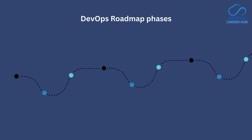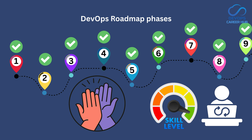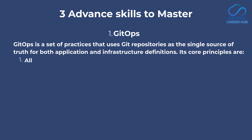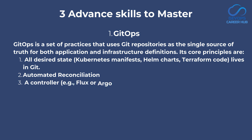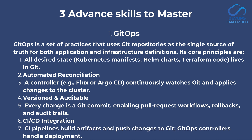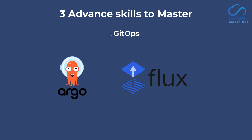If you have completed all nine phases of the DevOps roadmap, give yourself a big high five. By now you would have become a highly skilled DevOps engineer ready to excel in the job and in interviews. If you want to take it further and explore the latest DevOps trends, here are three additional skills to master. The first one is GitOps — a modern DevOps practice that uses Git as the single source of truth for managing both application code and infrastructure. It automates deployments and infrastructure changes by storing configurations in Git repositories, enabling teams to apply changes, rollback issues and maintain consistency using familiar Git workflows. You can learn either ArgoCD or Flux, both of which are popular GitOps tools.